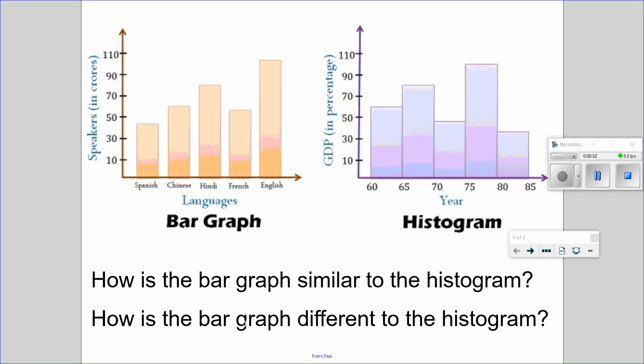But now, how is the bar graph different to the histogram? Well, notice how the bars here are connected between each other. On here, there are gaps between. So there are no gaps and there are gaps.